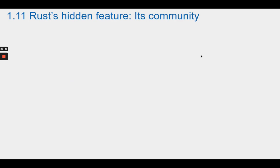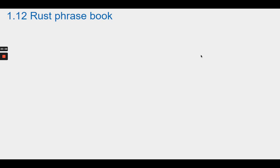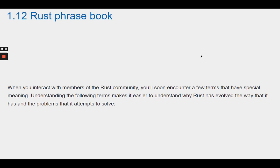Section 1.11 Rust's hidden feature: its community. It takes more than software to grow a programming language. One of the things that the Rust team has done extraordinarily well is to foster a positive and welcoming community around the language. Everywhere you go within the Rust world, you'll find that you'll be treated with courtesy and respect.